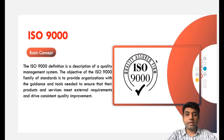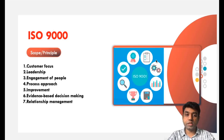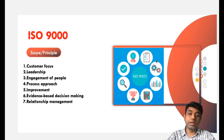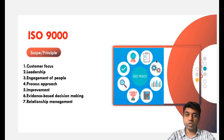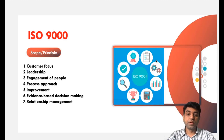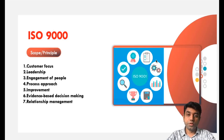Coming to the principles and scope of ISO 9000. First, there will be a customer focus approach in ISO-based organizations. Second, leadership quality will be developed, because every individual working in an ISO certified organization will be focused on quality improvement. Third is the engagement of people — each and every individual will be involved in quality improvement. Fourth is the process approach: to improve quality, we need to improve the process.